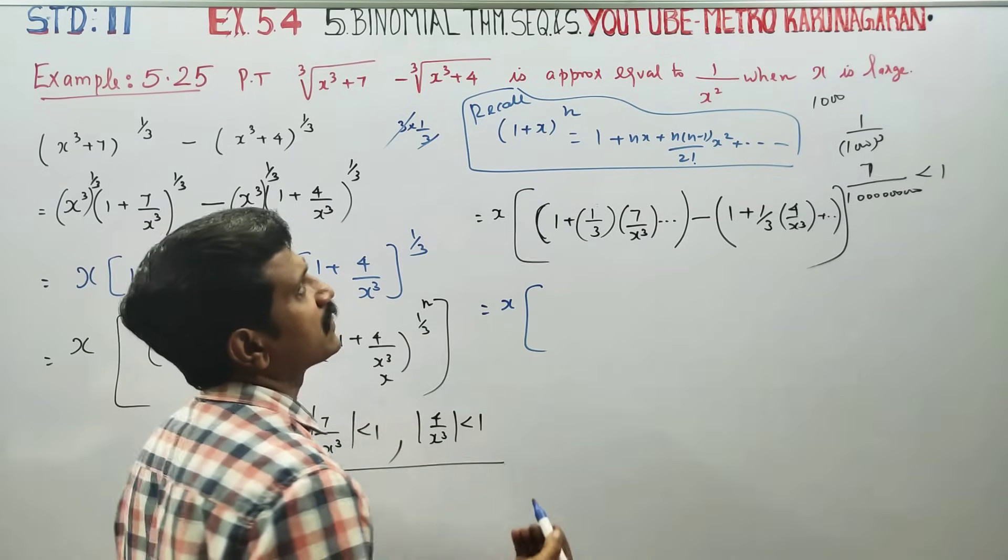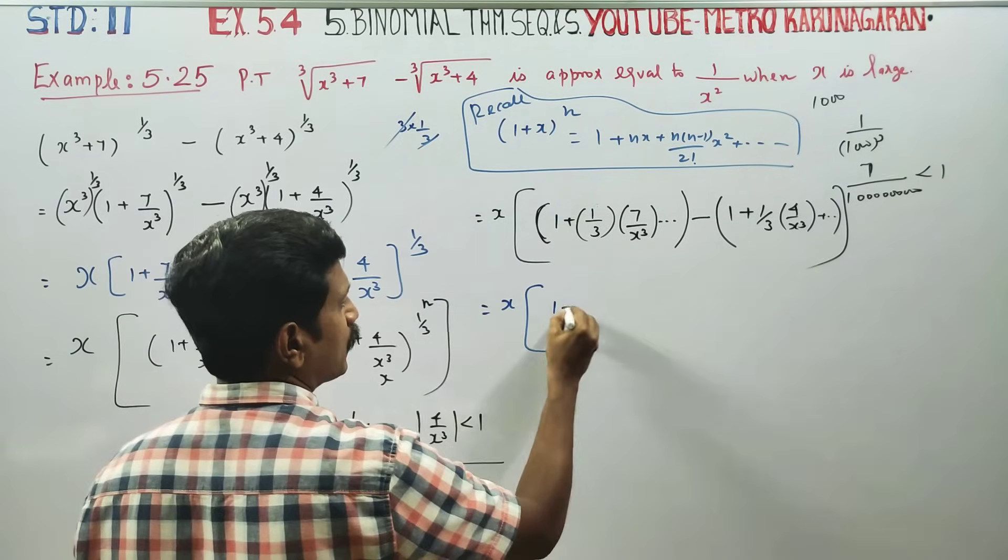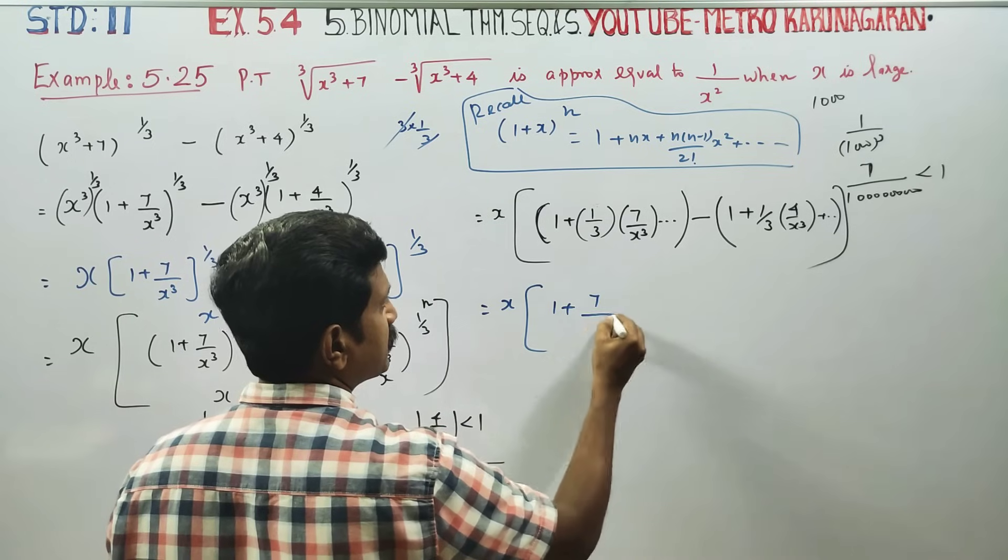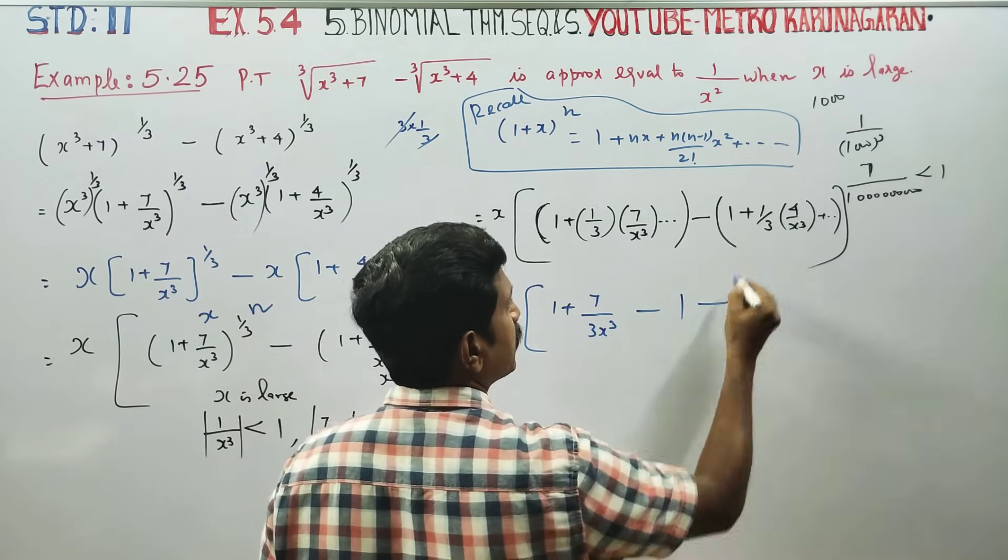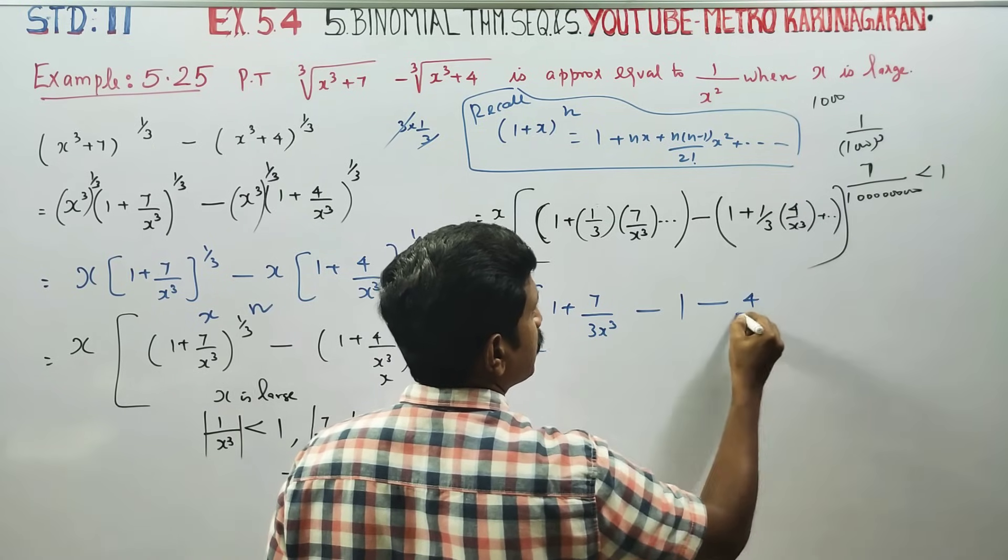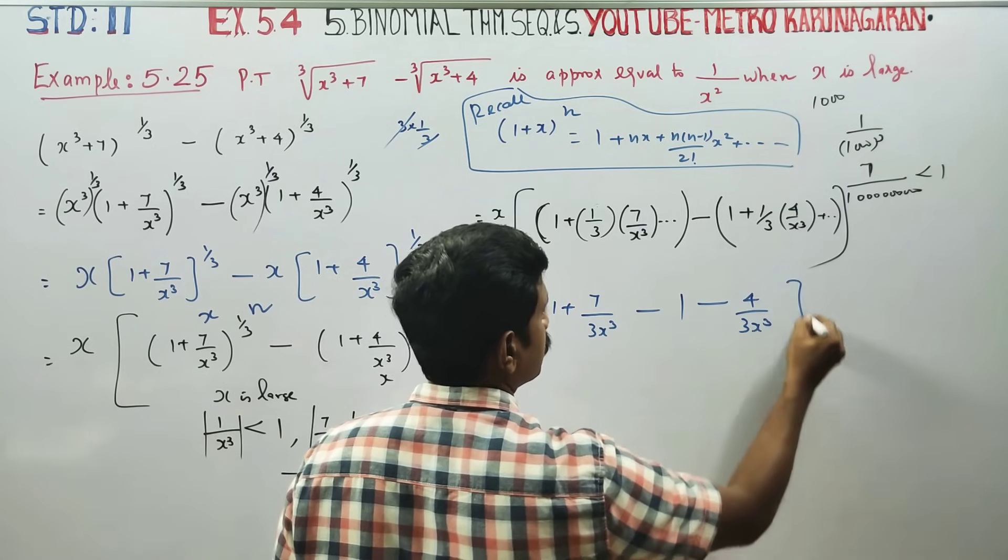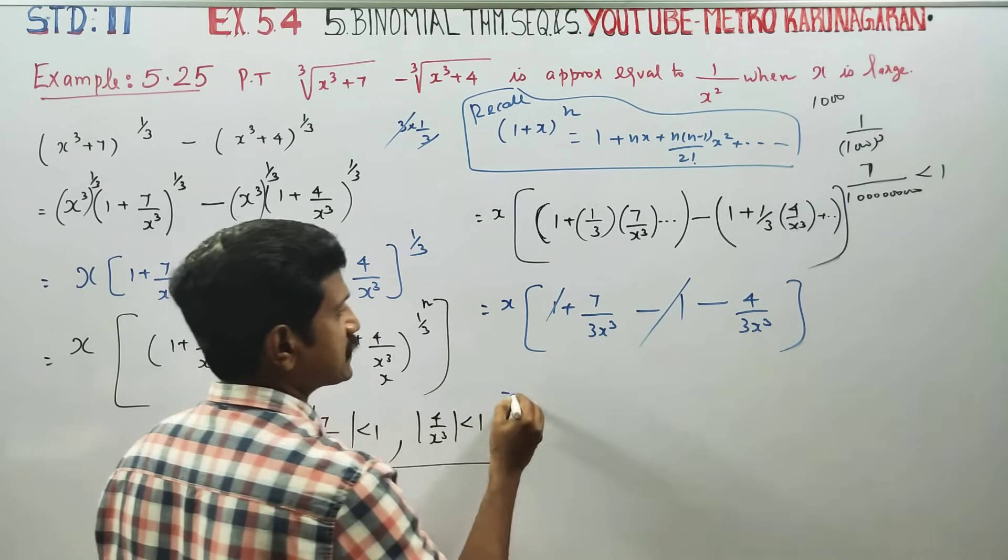This simplifies to approximately x[1 + 7/(3x³) - 1 - 4/(3x³)]. The 1's cancel out.